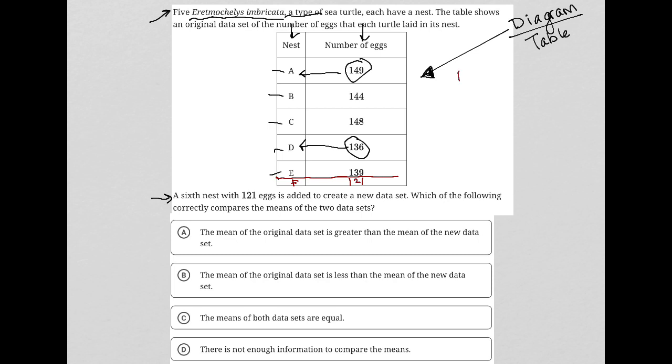Data set one, I'll call it D1, is based upon the mean of these values. How do you find a mean? You find a mean by adding up all your data and then dividing by the number of values that you have. So I'm going to my calculator and see, what is 149 plus 144 plus 148 plus 136 plus 139 plus 121 divided by 6, and what I get is 143.2.